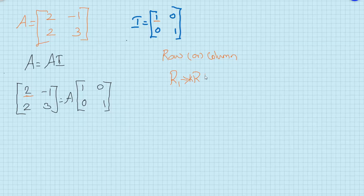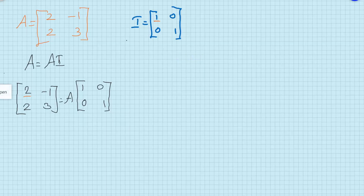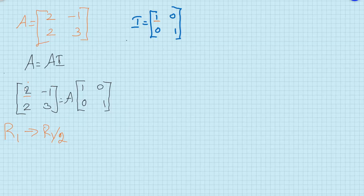A row operation takes the form: Row k = scalar·Rowᵢ ± another scalar·Rowⱼ. What is not allowed is something like Row 1 = Row 1 - 1, meaning you cannot simply add or subtract a scalar from a row. You can multiply or divide a row by a scalar, and you can add or subtract another row multiplied or divided by a scalar. Care should be taken while doing the operation.